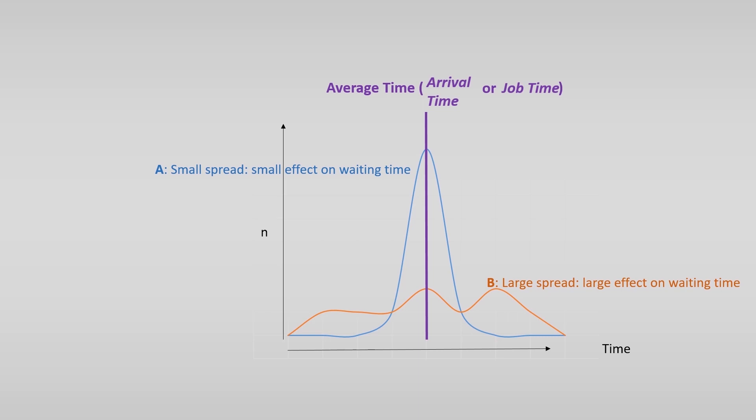But if the measurements, as presented in the orange line, show that these times are almost never the mean time or even near the mean time, you know the waiting time will be large. In statistics there is a measure for this spread.